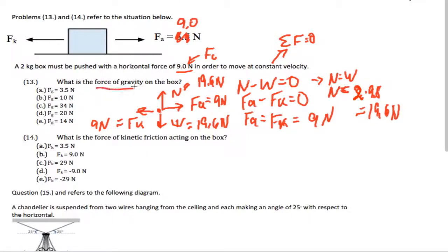So I've just gone ahead and solved for every single force in this problem. When I do that, I get the force of gravity, which is the same as the weight. So I'm going to end up getting a weight of 2 kilograms times 9.8 is about 19.6, which is about 20. Now we want to know the force of kinetic friction acting on the box, and that's going to be 9 Newtons from our picture.